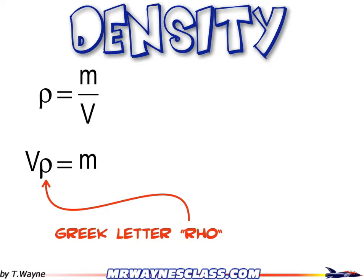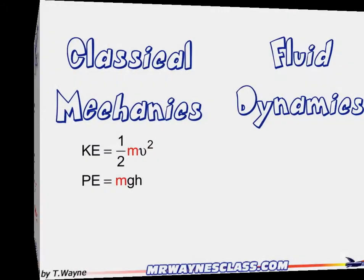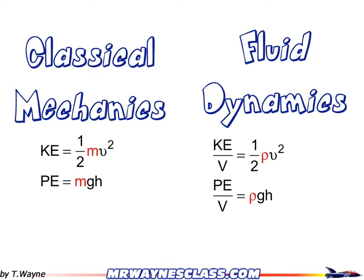Let's do a comparison between classical mechanics and fluid dynamics. In classical mechanics, kinetic energy is one half mv squared, and potential energy due to gravity is mgh. When we convert to fluid dynamics, we divide everything by volume. So kinetic energy divided by volume becomes one half rho v squared, and potential energy divided by volume becomes rho gh. In classical mechanics we have solid objects; in fluid dynamics we have collections of molecules, so we use density to define those collections.